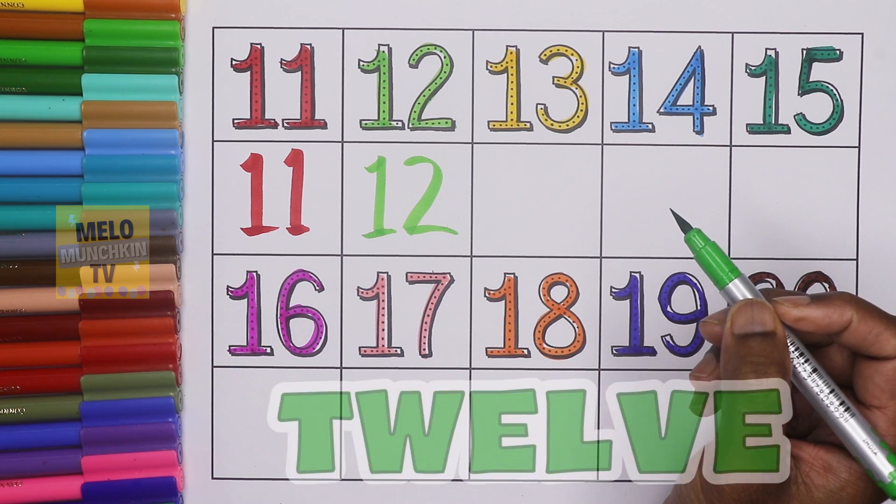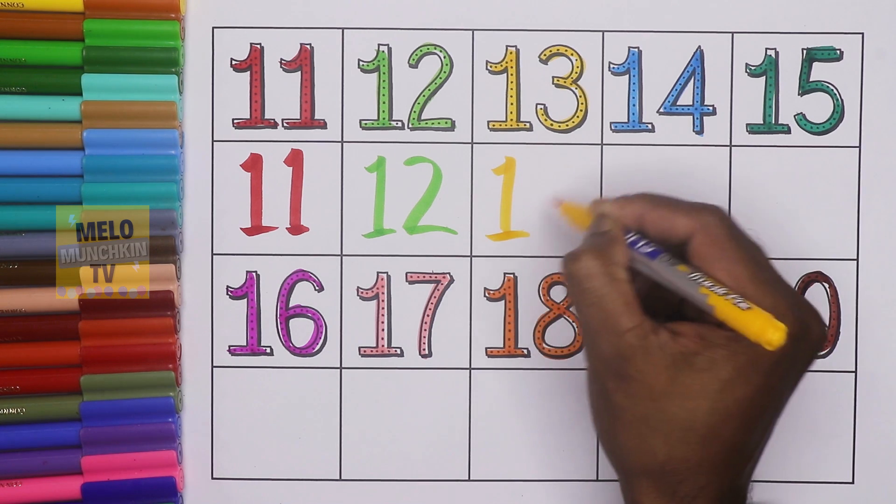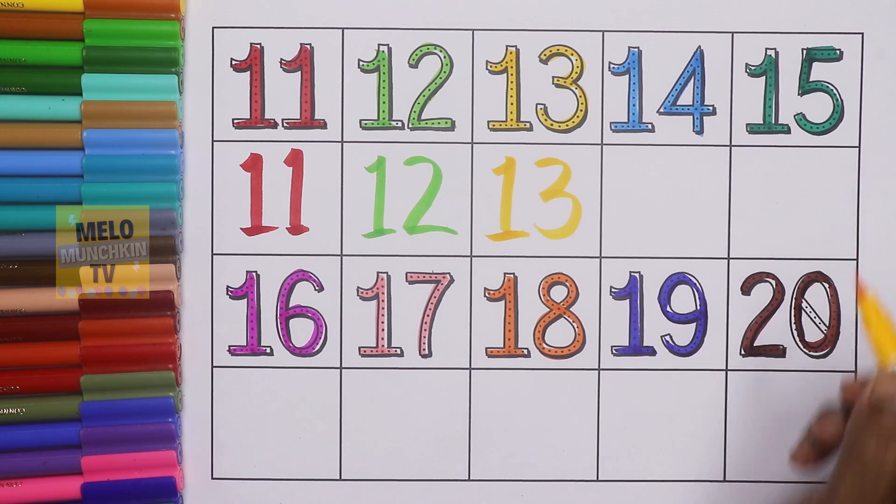This is 12, 1-2, 12, and the spelling is T-W-E-L-V-E, 12. This is 13, 1-3, 13, and the spelling is T-H-I-R-T-E-E-N, 13.